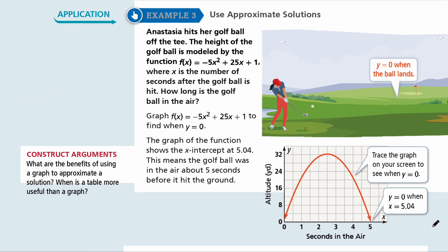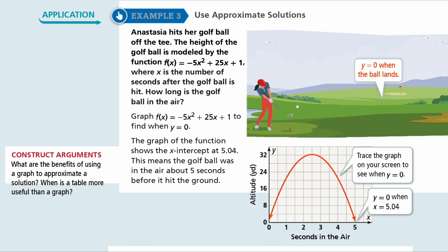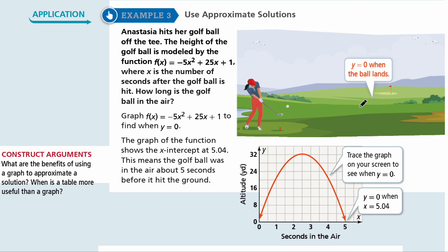Let's look at Example 3: use approximate solutions. Anastasia hits her golf ball off the tee. The height of the golf ball is modeled by f(x) equals negative 5x squared plus 25x plus 1, where x is the number of seconds after the golf ball is hit. How long is the golf ball in the air? You can trace the graph to see when y equals 0 — at the beginning and when x is about 5.04. So after approximately 5.04 seconds, the ball hits the ground.